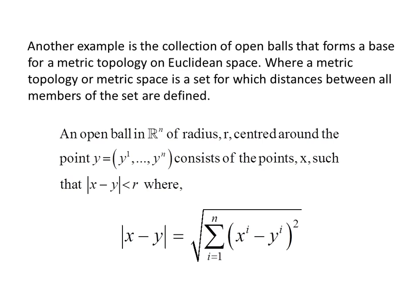Another example is the collection of open balls that forms a base for a metric topology on Euclidean space, where a metric topology or metric space is a set for which distances between all members of the set are defined. An open ball in R^n of radius R centred around some point Y = (Y1, ..., Yn) consists of the points X such that the modulus of X minus Y is less than R — not including R, but less than R. In three dimensions you have a spherical ball whose surface is not included.